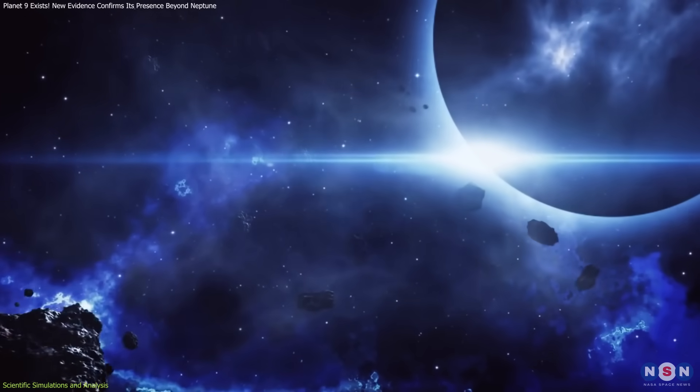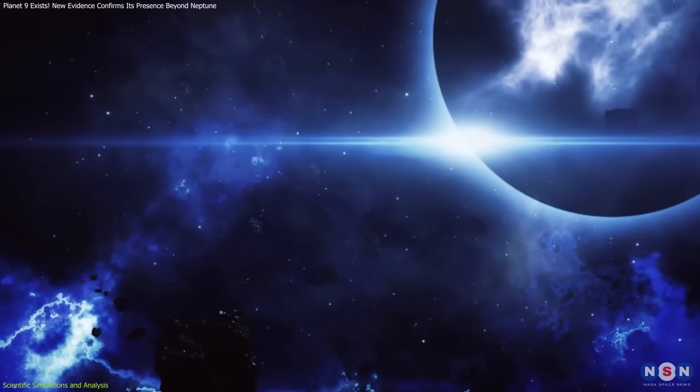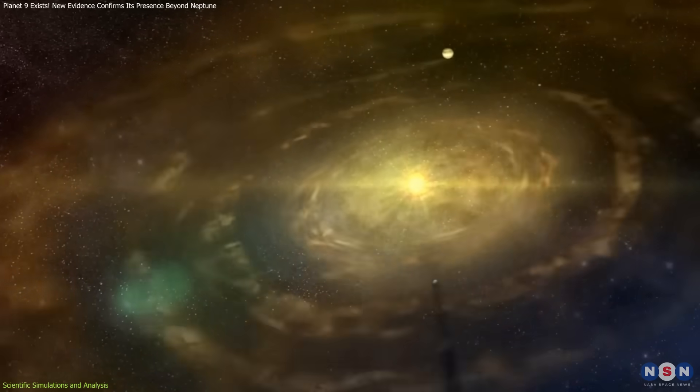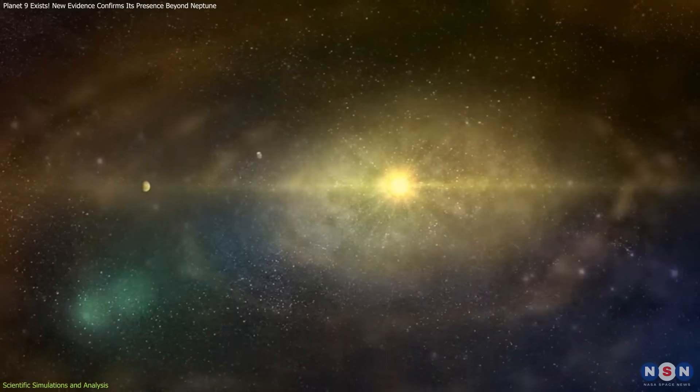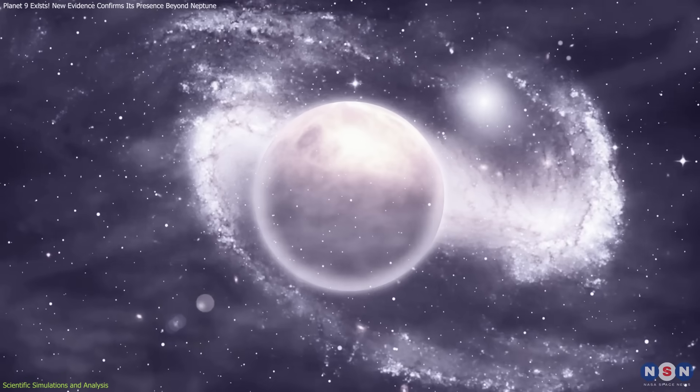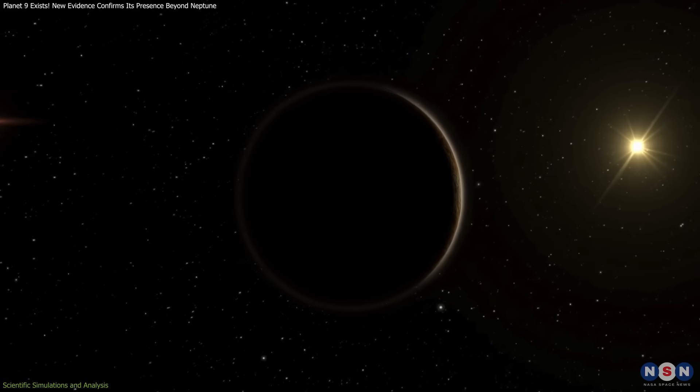It would be the first major planet discovered in our solar system since Neptune in 1846. This also opens the door to new questions about the formation of planetary systems in general. If Planet Nine exists, how did it get there? Was it captured from another star system, or did it form in place? And we're only now discovering it.